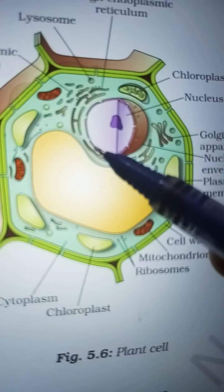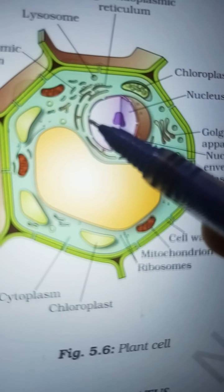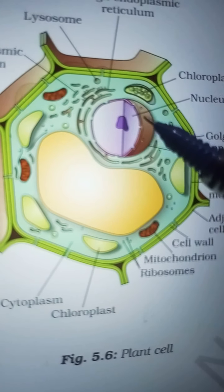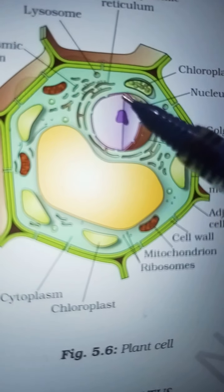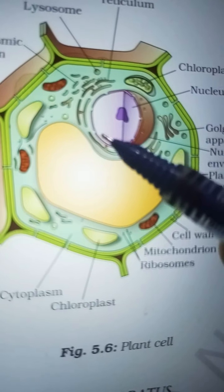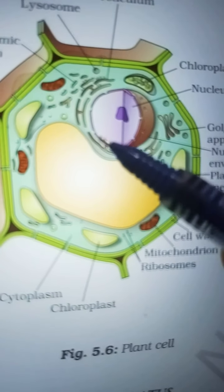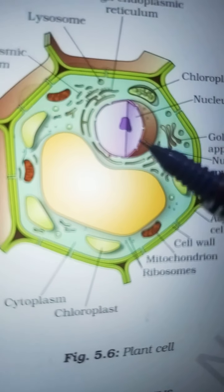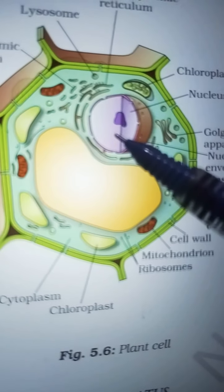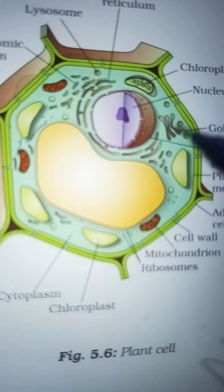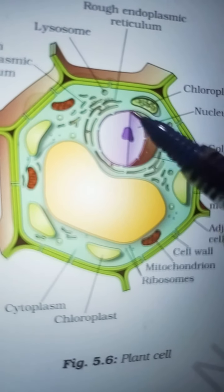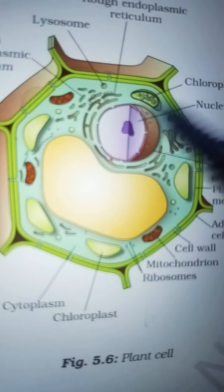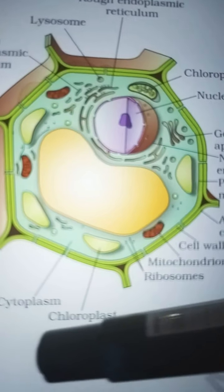In prokaryotic cells there is no nuclear membrane, while in eukaryotic cells there is a nuclear membrane. The nucleus is the centermost part of the cell and it is very important, just like the brain.